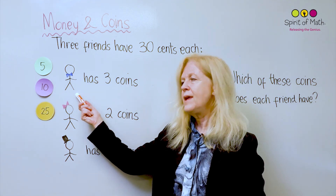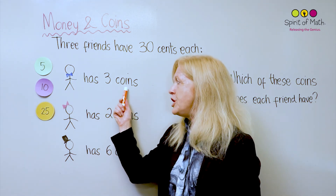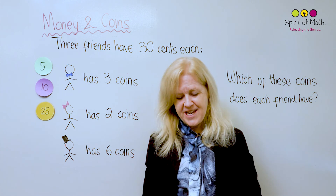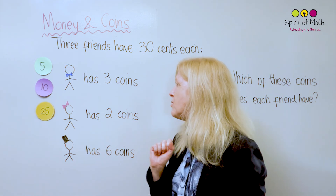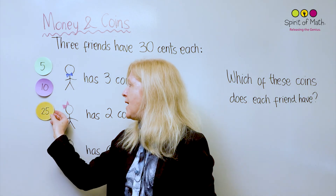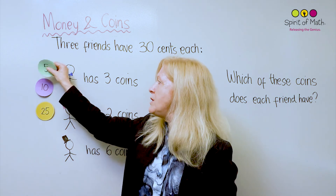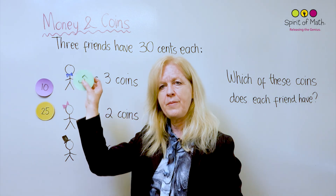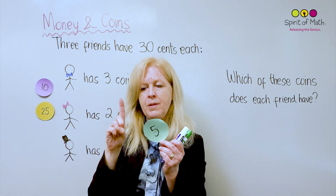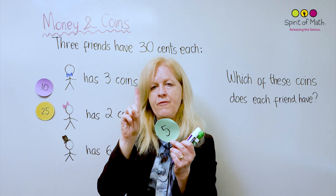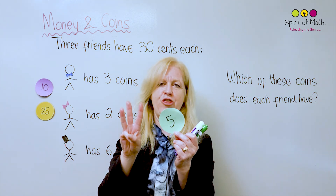This friend with the bow tie, he or she has three coins. We have to write the three coins down and figure out what the three coins are. Let's start with the five — if the three coins were 5 cents, you would have 5 plus 5 plus 5. So let's do that together: 5 plus 5 plus 5 would be 5, 10, 15. That doesn't give you 30.